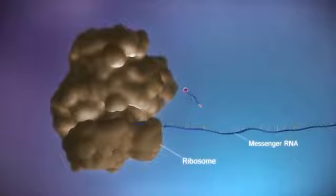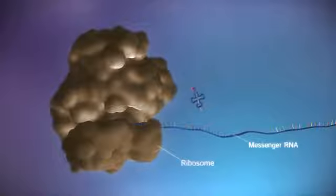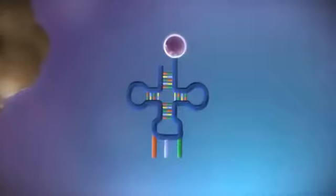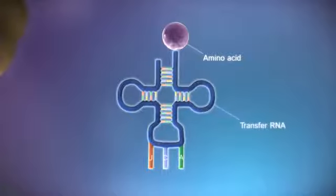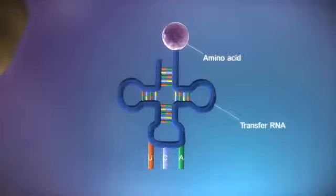The ribosome reads the code in the messenger RNA to produce a chain made up of amino acids. There are 20 different types of amino acid. Transfer RNA molecules carry the amino acids to the ribosome.